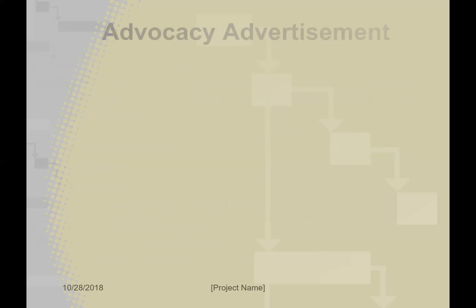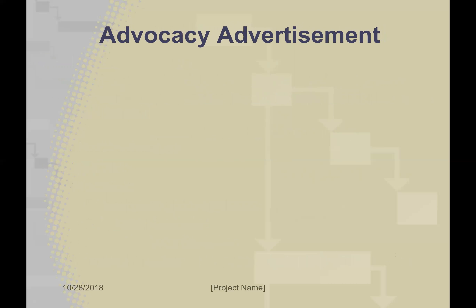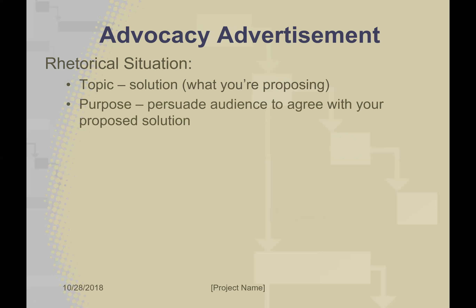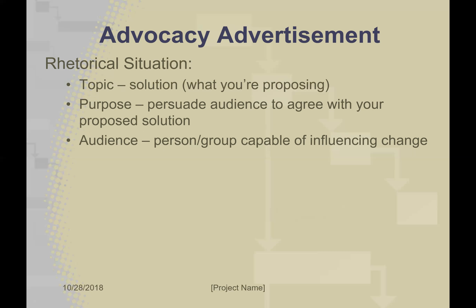The second portion of this assignment is the advocacy advertisement. Beginning with the rhetorical situation again, the topic is a little different — rather than focusing on the problem and proposed solution, you are focusing specifically on what you say should be done to fix the issue: your solution. You're persuading the audience to agree with your proposed solution, but the audience might be slightly different. Instead of being the person or entity capable of implementing the solution, here you may be promoting your advertisement toward people who are capable of influencing that entity or person.